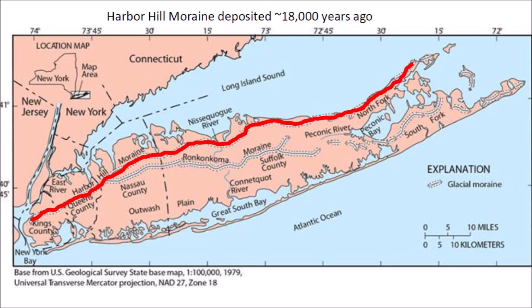The younger, more northerly moraine is called the Harbor Hill Moraine. This was the most recent advance, or Stage 2, of the Wisconsin Glacier, which reached its most southward advance about 18,000 years ago. This glacier completely melted in the New York City region approximately 13,000 to 12,000 years ago.